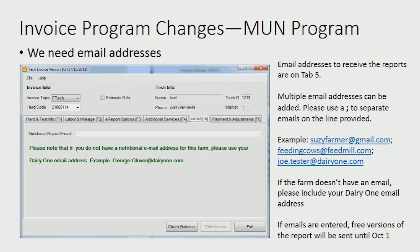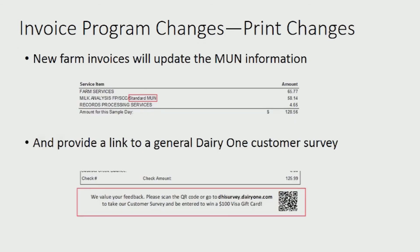As soon as emails are entered, even during the promotional period, we will begin sending the new reports to the farms. The printed invoice will include the specific MUN program charge. Also, a separate change means the invoice will contain information and a QR code link to a general Dairy One customer service survey.